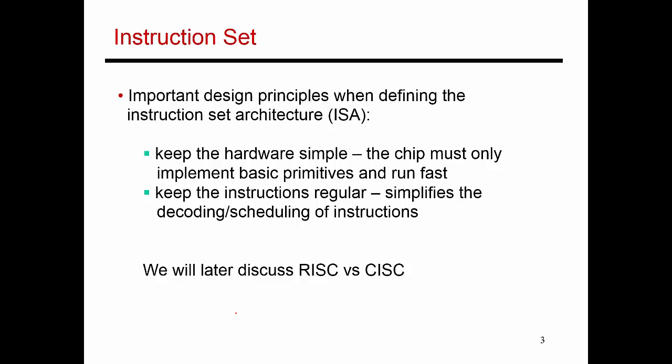So essentially, you want to keep the hardware simple. You also want to keep the instructions regular. And that ensures that when the hardware is trying to decode the instruction and figure out what needs to be done, it has a much easier time. So you can have a reduced instruction set computer, MIPS being an example of that. Or you can have a complex instruction set computer, x86 being an example of that. And we will get back to this discussion later to decide which one is perhaps more efficient.